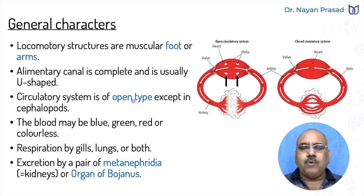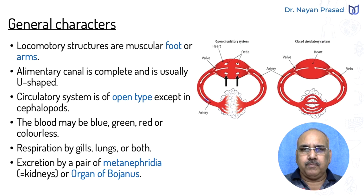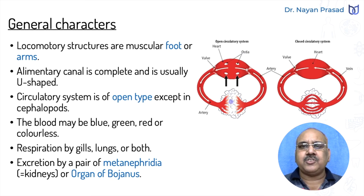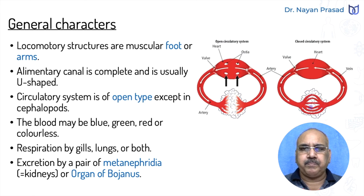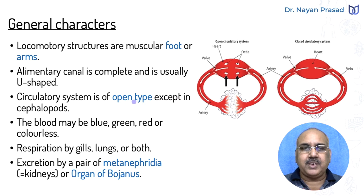The circulatory system is of open type. We have seen open type circulatory system in Phylum Arthropoda also, in which the blood vascular system includes heart, blood vessels, and blood. Blood flows through blood vessels, but the blood vessels are open at their tips — meaning capillaries are open — so that blood is released inside the body cavity. This is open type blood circulation. In annelids, we have seen closed type, in which blood capillaries are not open and blood always remains inside closed blood vessels. In most molluscs, the circulatory system is of open type. The exception is Cephalopoda, which includes octopus-like animals, where we see the tendency of closed type circulatory system.